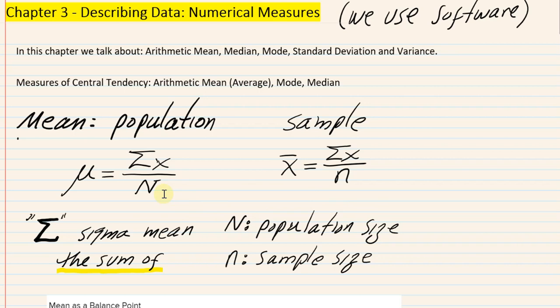For example, if I want to know the average balance on a credit card, I can take a sample of 50 people at random in a shopping mall — that would be little n. Or if I have access to a database at Visa or MasterCard or American Express, that constitutes a population — capital N — tens of millions of scores, as opposed to 20 or 50 that I can afford to collect.